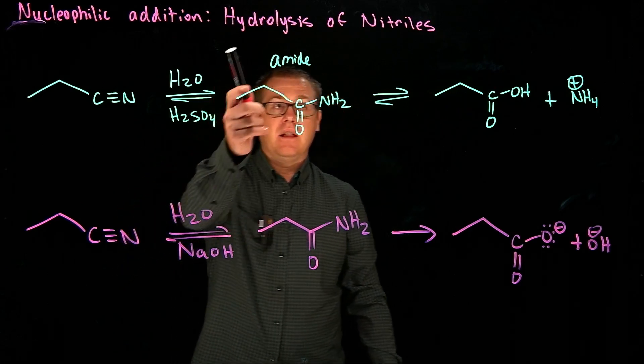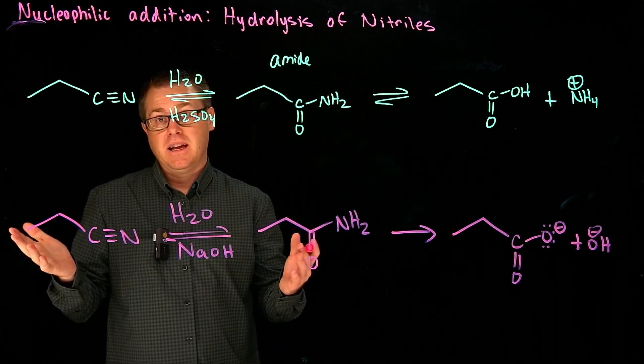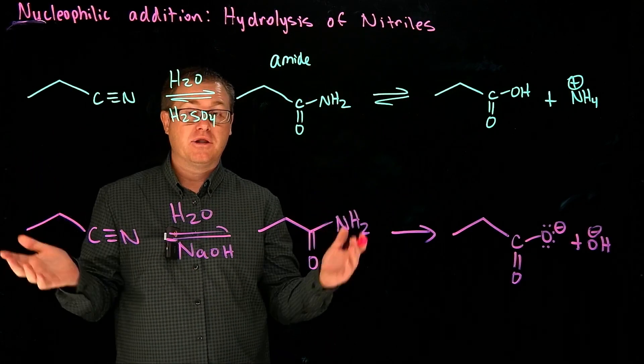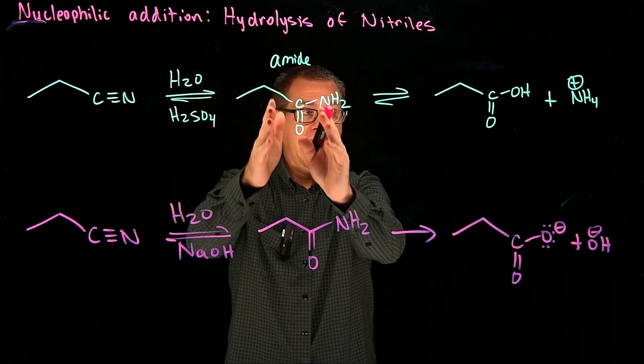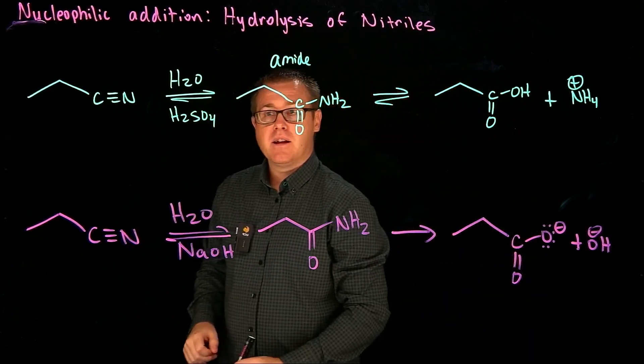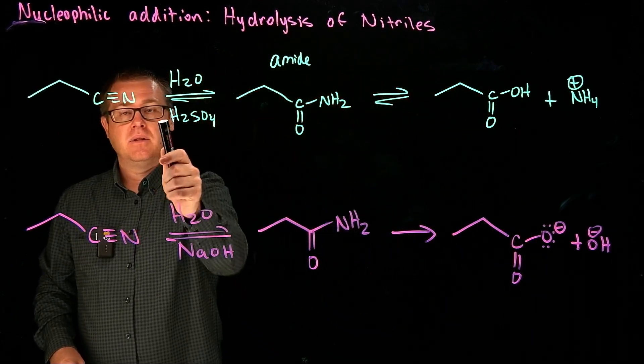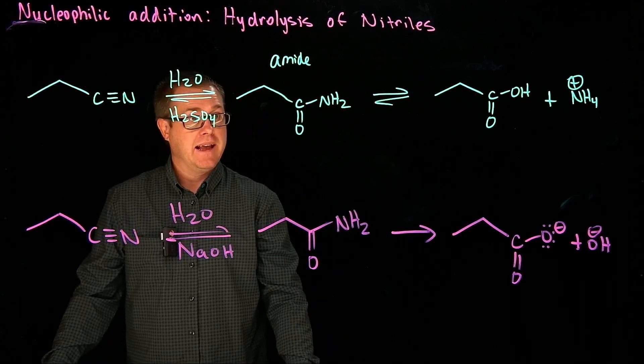But to hydrolyze a nitrile, it happens really in two major steps. You go from the nitrile into the amide, and then the amide into the carboxylic acid. So I want to take a look at the mechanism of the acidic conditions and how that all takes place.